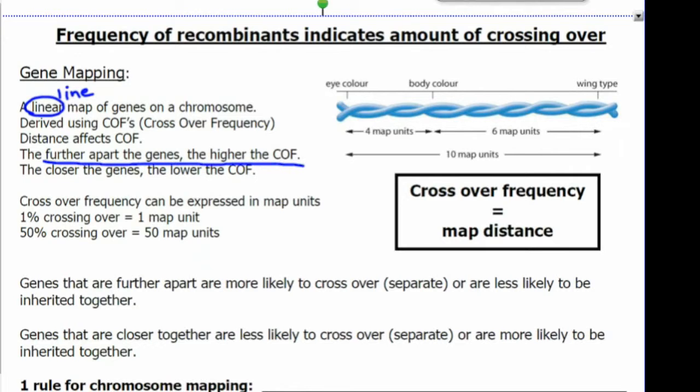The further apart the genes on the chromosome, the higher the crossover frequency. The closer the genes, the lower the crossover frequency.